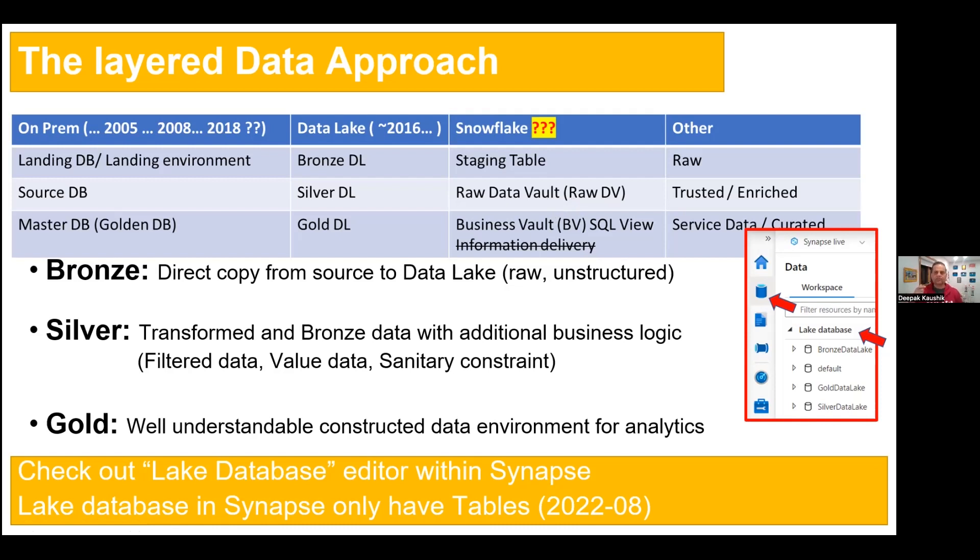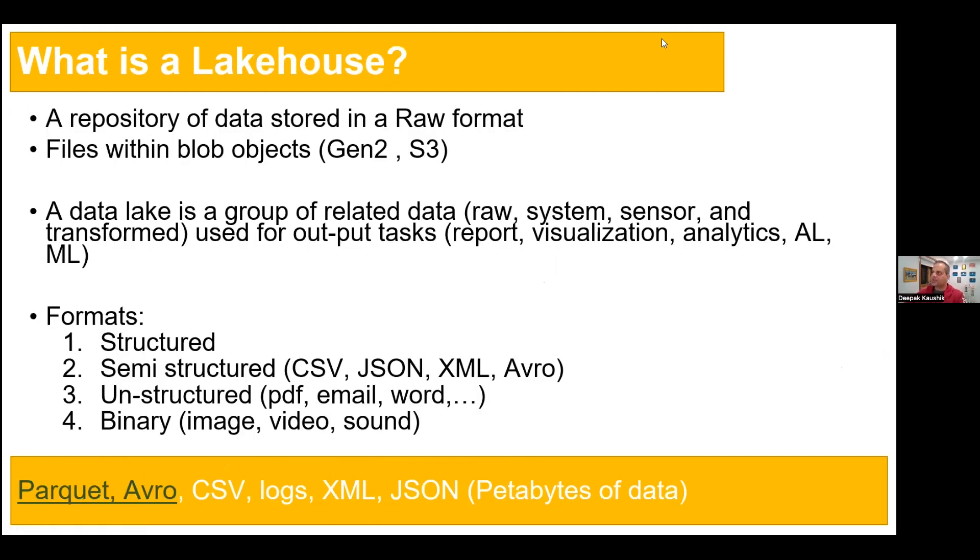So basically in bronze, we always get the raw copy from any streaming device. For example, if I'm getting streaming data or batch data, that data first goes into the bronze table. And then once we perform any transformation on that data, that will be in silver. And gold will be the final version of data. Maybe in bronze, I have one terabyte of data. But in gold, I have maybe 10 gigs of data because gold has a lot of transformation and massage, and then we are getting that data.